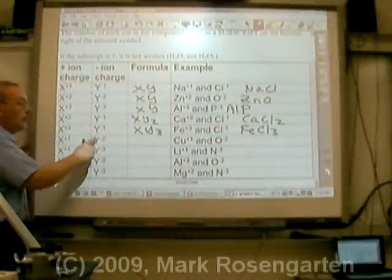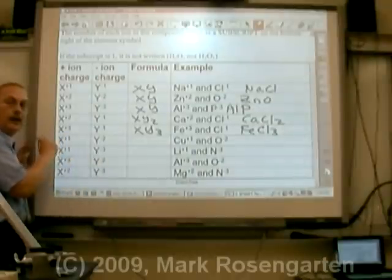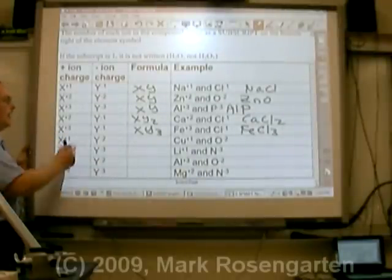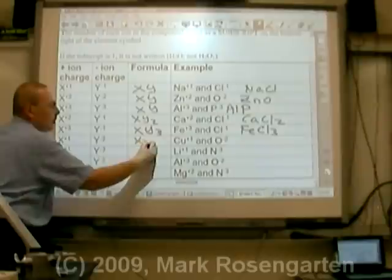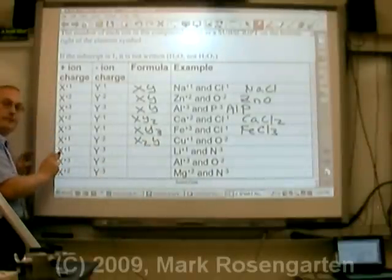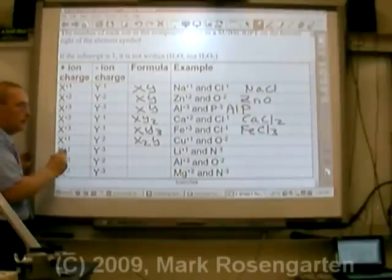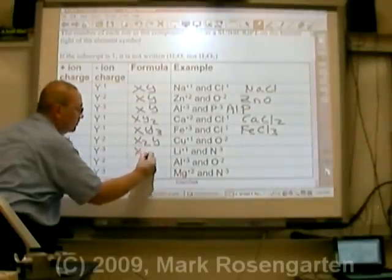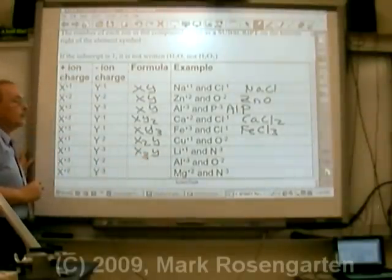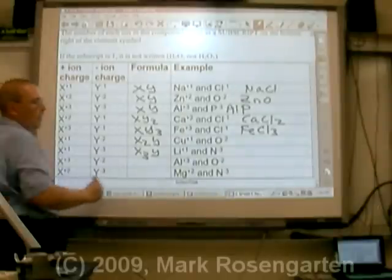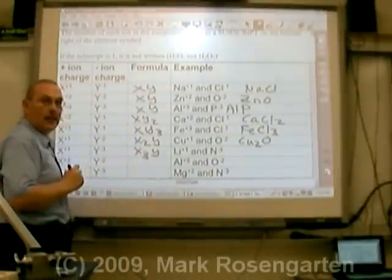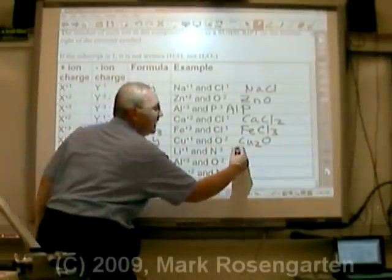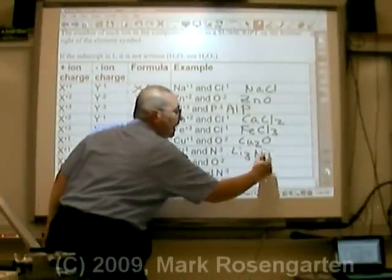Here, the larger charge belongs to the negative ion, also known as the anion. It takes two plus ones to cancel out a minus two. It takes three plus ones to cancel out a minus three. So when copper and oxide combine, it will take two coppers to cancel out the oxide. And it will take three lithiums to cancel out the nitride.